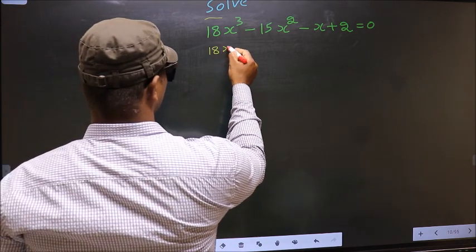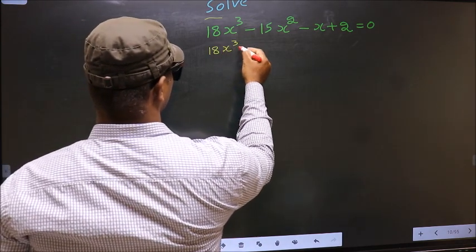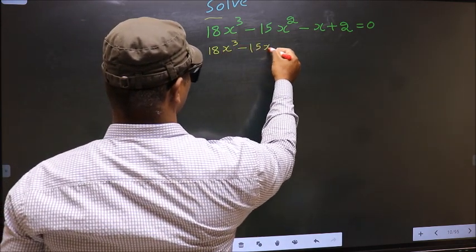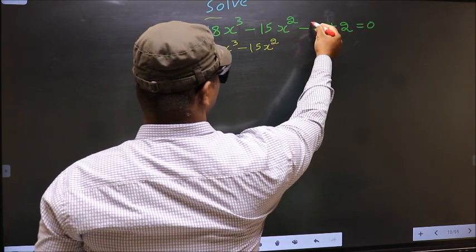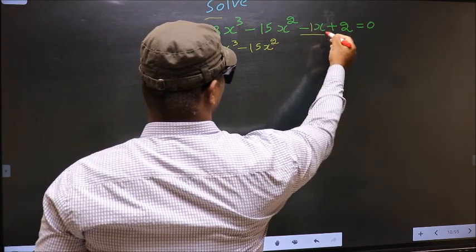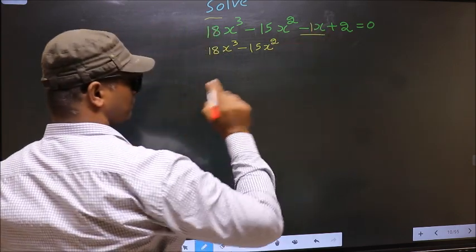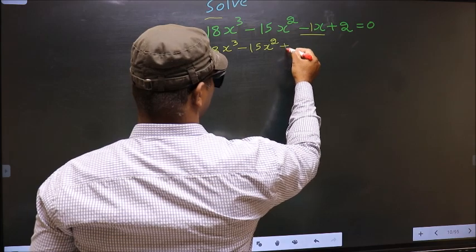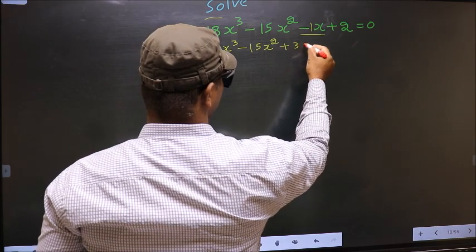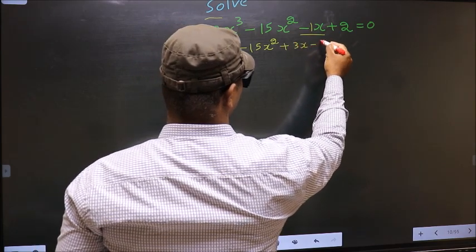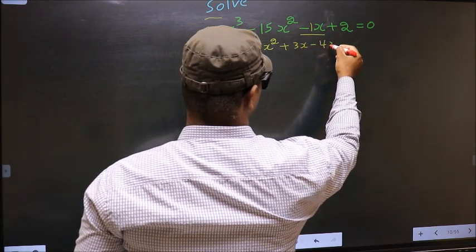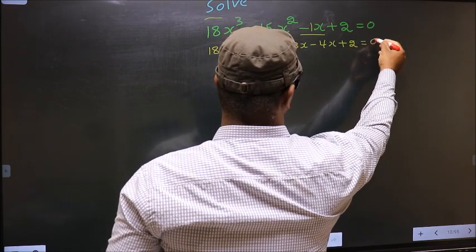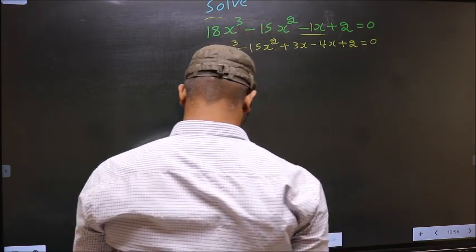18x cube minus 15x square. In place of minus 1x, now I write plus 3x minus 4x plus 2 equal to 0.